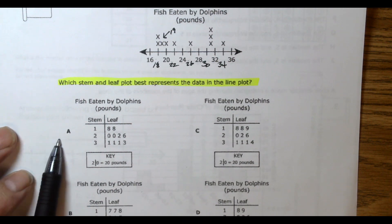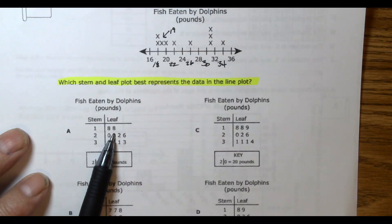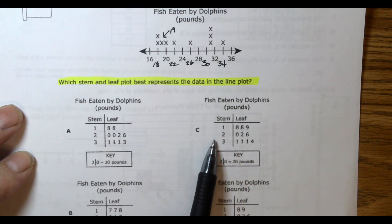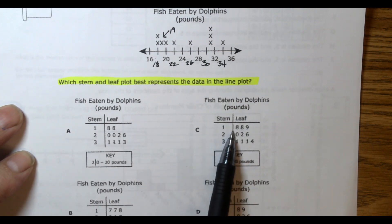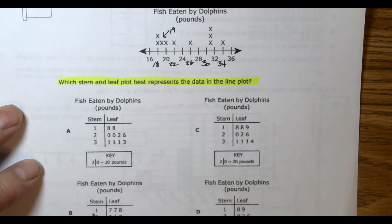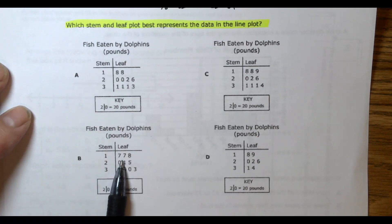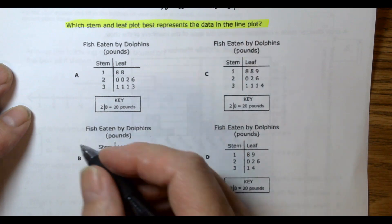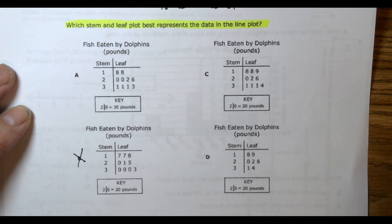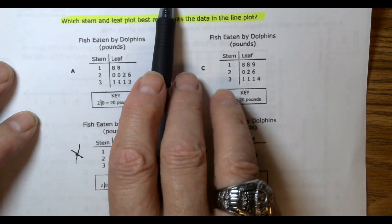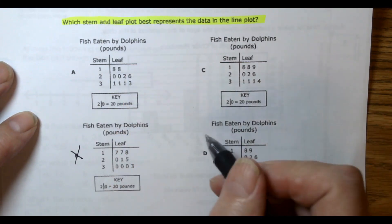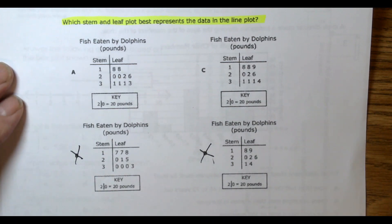Let's check A — it has 18 and 18, so that might be a possibility. Looking at C, the stem is 1 and the leaf is 8, so that equals 18 — that could be it. Now B has 17, and we don't even have a 17 on this line plot, so we can scratch that out. D has only one 18 and one 19, but we're supposed to have two 18s, so we can cross that out. Now we're down to A and C.